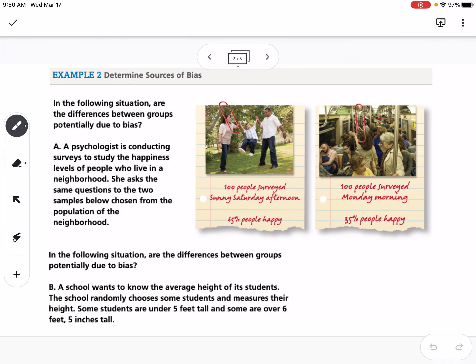Example two is to determine sources of bias. A psychologist is conducting surveys to study the happiness level of people who live in a neighborhood. In the first group, 100 people were surveyed on a sunny Saturday afternoon and 65% of the people were happy. In the second group, 100 people were surveyed Monday morning and 35% of people were happy. This would be a situation where we definitely have bias.